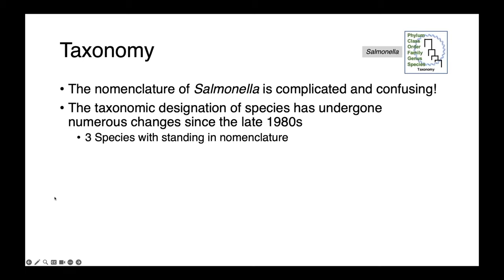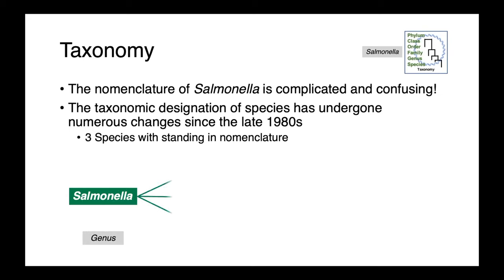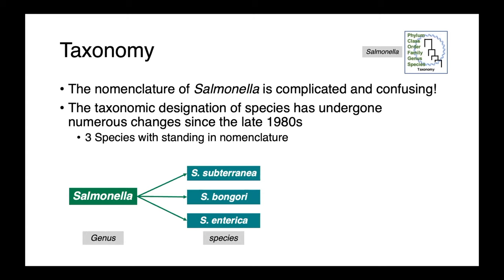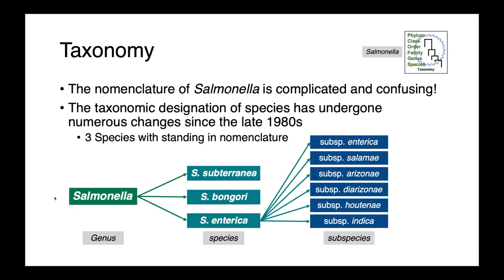The nomenclature of salmonella is a little complicated and confusing. The taxonomic designation of species within this genus has undergone a number of changes since the 1980s. At present, we have three officially recognized species within the genus salmonella: subterranea, bongorae, and enterica. Within salmonella enterica, we have six subspecies: enterica, salame, arizona, diarizona, hautenae, and indica.